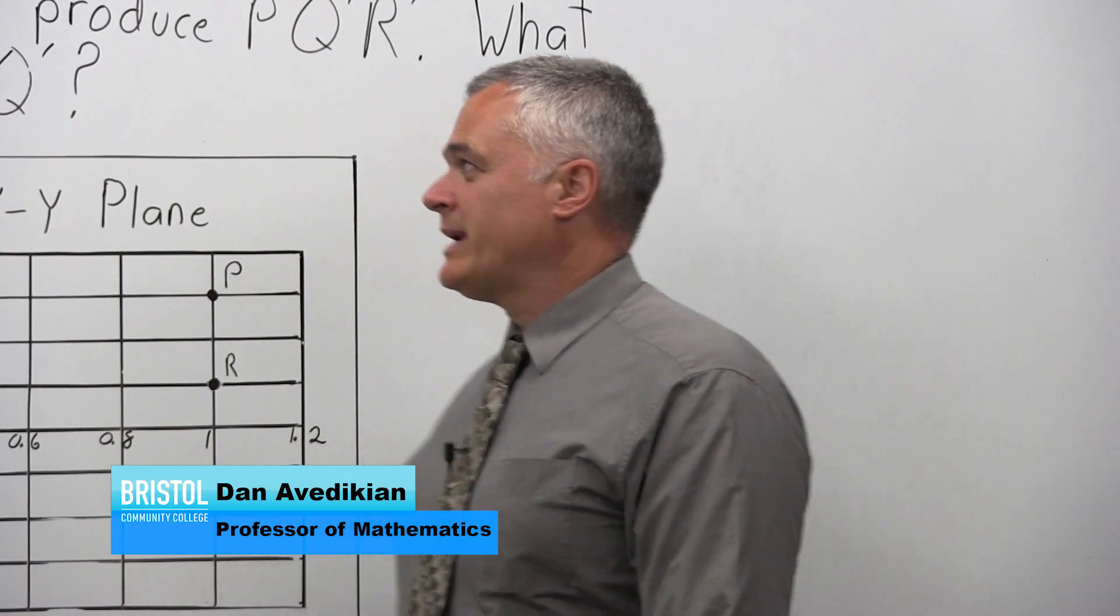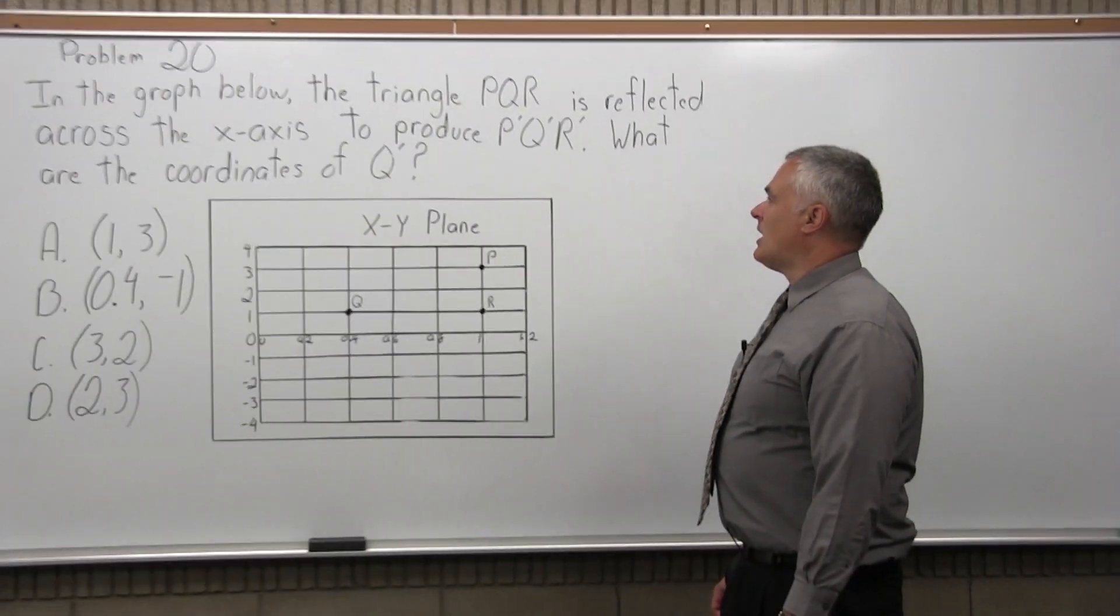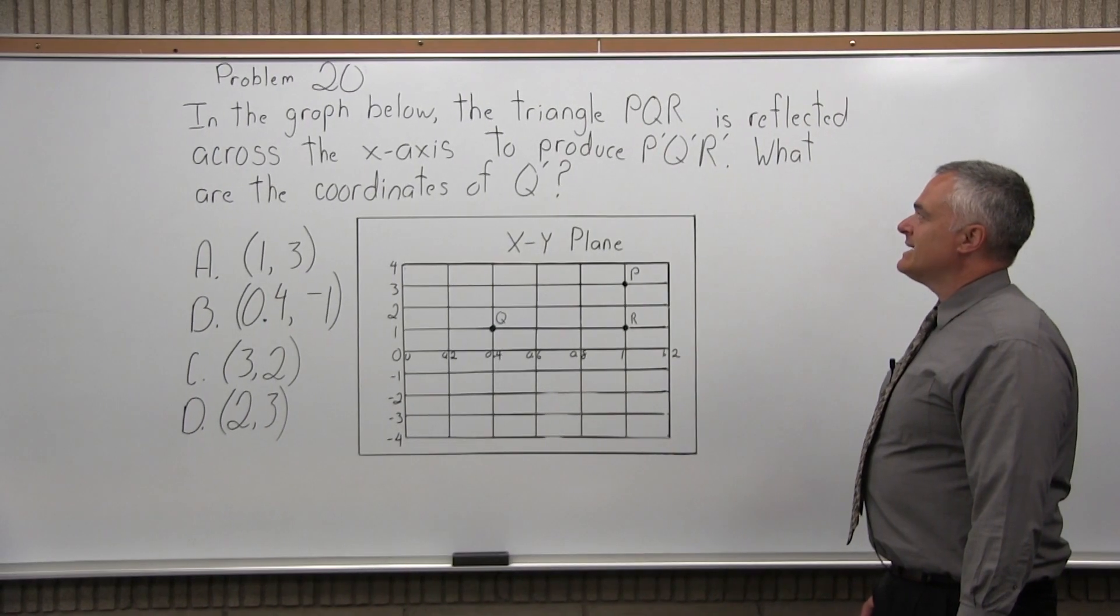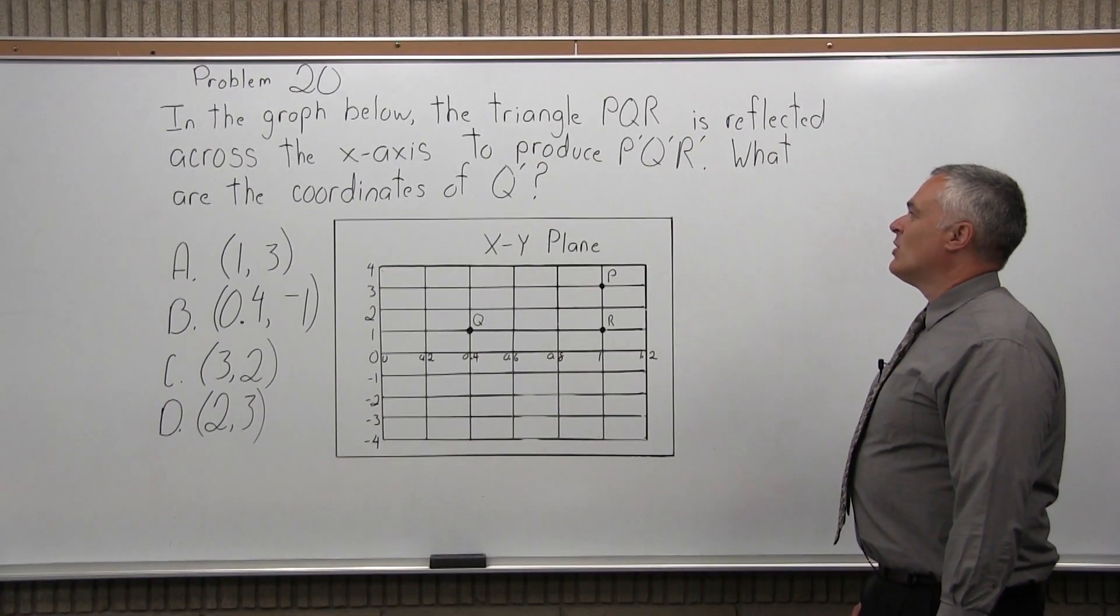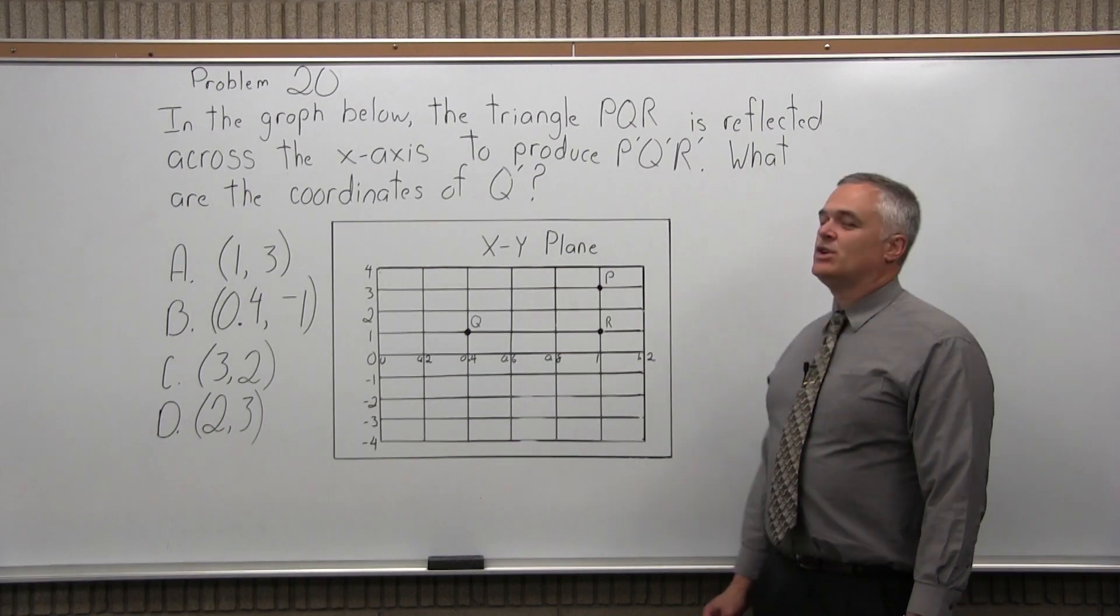This is Problem 20. It says in the graph below, the triangle PQR is reflected across the x-axis to produce P prime, Q prime, R prime. What are the coordinates of Q prime?